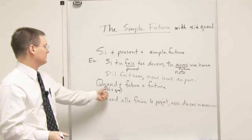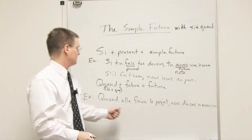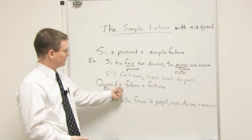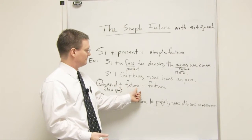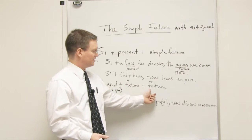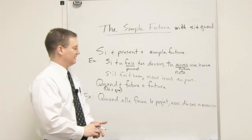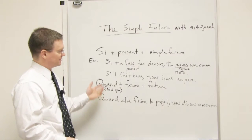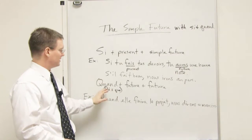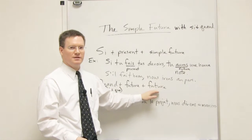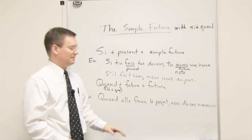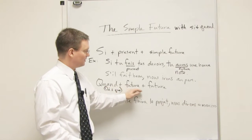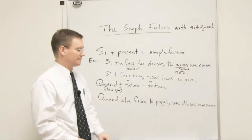So here, notice here we have quand, plus future, future. This is the idea of when, when you come, when you will do this, then this will happen. In English, it doesn't quite translate like that. In English, we say, when you do this, then this will happen. But in French, it's when and then will, and then will, okay?